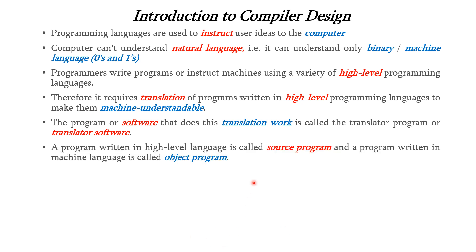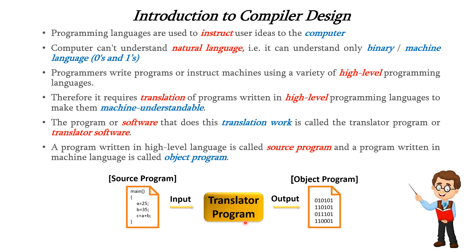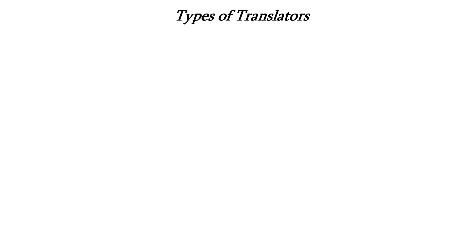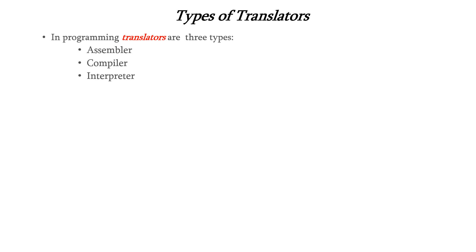The program written in high-level language is called as source program and the program written in machine language is called as object program. This diagram illustrates the concept of translator program. It takes the source program as input and generates the object program as the output. This translator can be further divided into several types. There are three types of translators namely assembler, compiler, and interpreter.